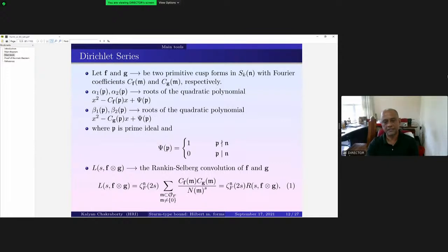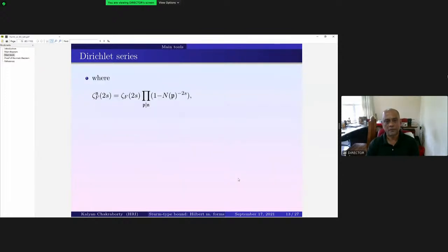m is in O_F and integral ideal m is not zero. So this is zeta_F^n(s) times R(s, f×g). So zeta_F^n(s) is simply the Dedekind zeta function, the standard Dedekind zeta function zeta_F(s) times this factor that was missing here.